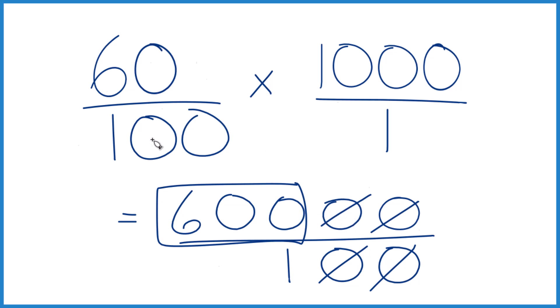Another way you can do this is take 60, divide by 100, get 0.6, multiply that by 1,000, that'll give you 600 as well.